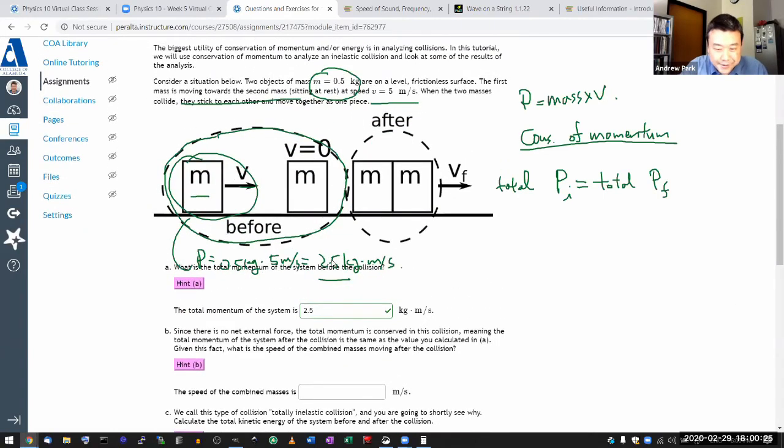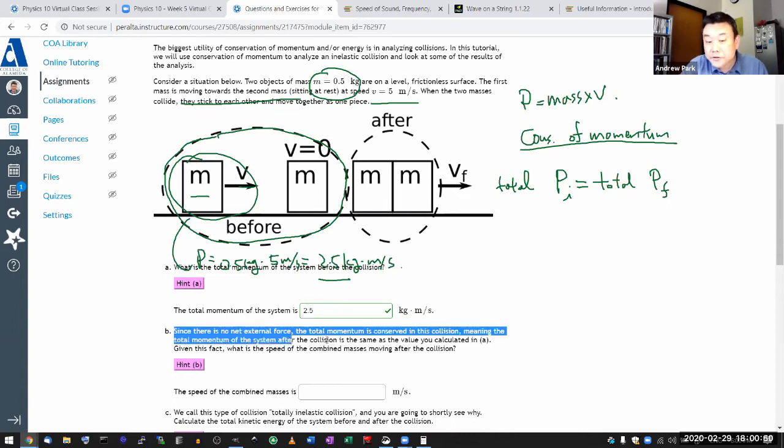So yeah, this is a tutorial type question. So in part B, it looks like if they were to ask about the total momentum of the system after the collision, I would give them the same answer. And that's kind of what it's saying here. Since there is no external force, total momentum is conserved, meaning the total momentum of the system after the collision is the same as what they found in it.